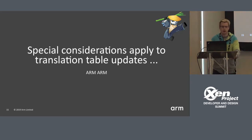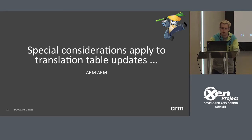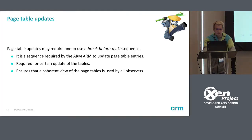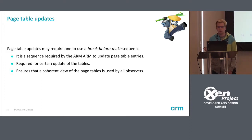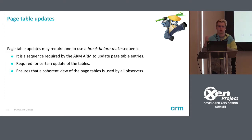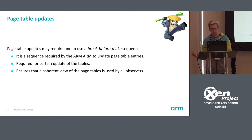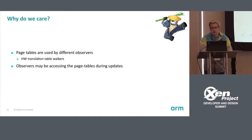Updating page tables according to the ARM ARM has special conditions. Page table updates may not be just 'I'm going to modify the entry' even if it's an existing one — you need to use a sequence called break-before-make. It's required by the ARM ARM every time you modify a valid entry to ensure all observers see a consistent view of the page table, so another CPU won't see half of a table update. On the platform you have multiple observers; one observer is the hardware page table walker, which may be walking the page table at the same time as you're doing updates.